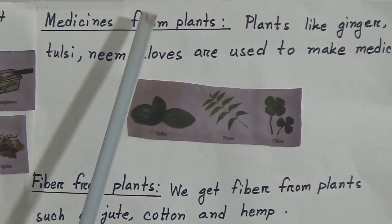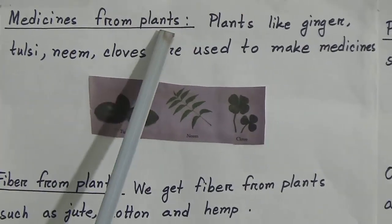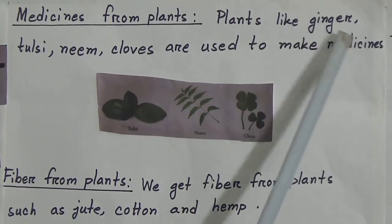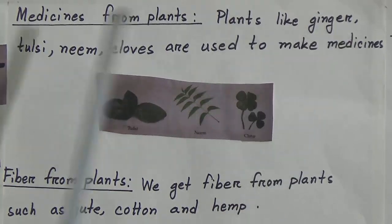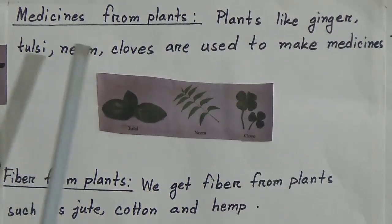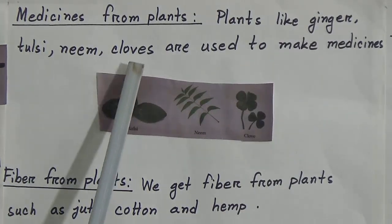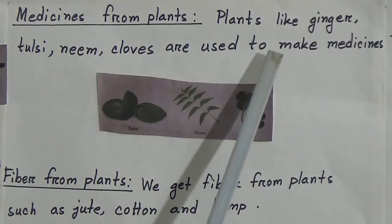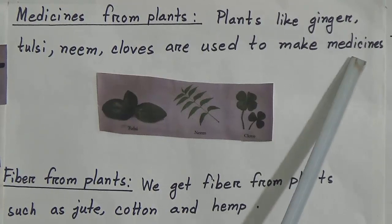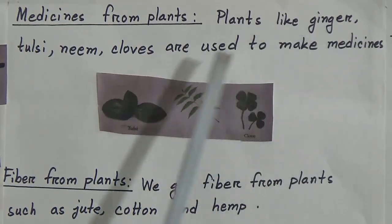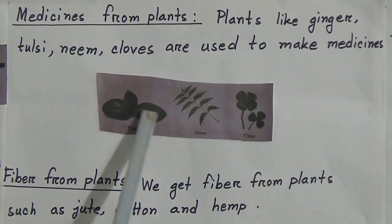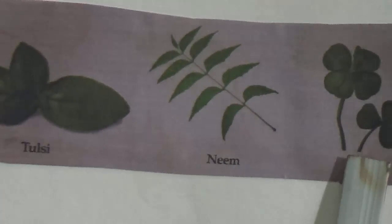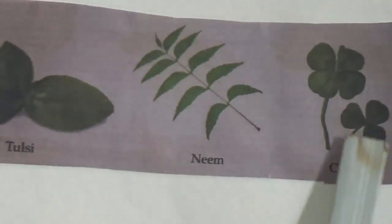Next point is medicines from plants. Plants like ginger, tulsi, neem, basil and clove are also used to make medicines. You can see here is tulsi, neem and clove plants.